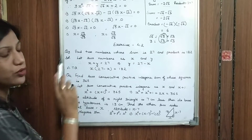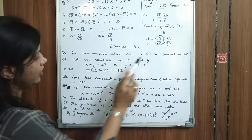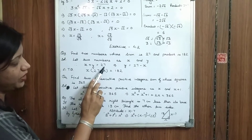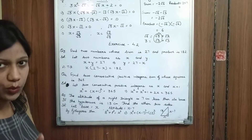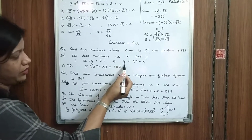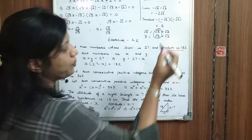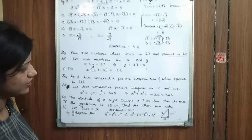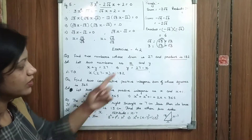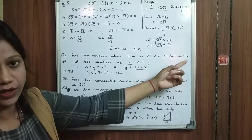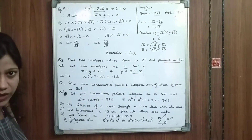Question 3 is given to you: Find two numbers whose sum is 27 and product is 182. Here, two numbers we need to consider. Let these numbers be x and y. The sum of x and y is equal to 27. Since we are solving by quadratic, we consider only one variable. So y is equal to 27 minus x. The second equation: product is 182, so x into (27 minus x) is equal to 182.